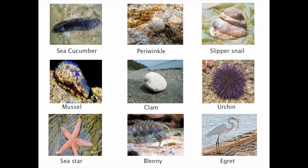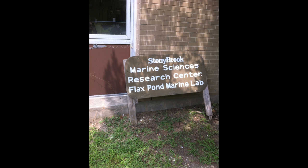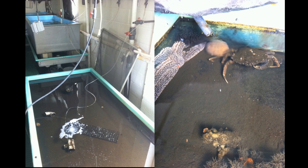This is the species legend students use to identify the animals found in the traveling marine touch tank. This is the Stony Brook Flax Palm Marine Lab, where the touch tank animals live throughout the summer. On the left is a top-down view of the flow-through sea table they lived in. On the right, there's the sea star and the green crab, along with some urchins in the back.